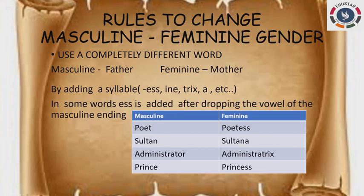'Prince' is a masculine gender, and the feminine gender is 'princess.' Here, what we did is remove the vowel E before adding ESS. Is it clear, students?